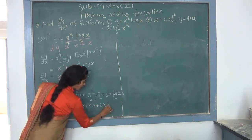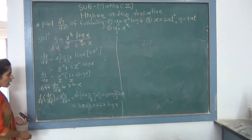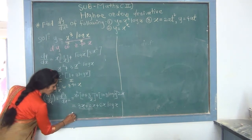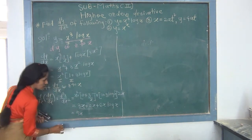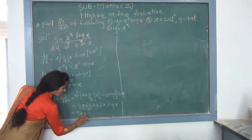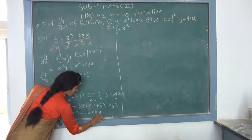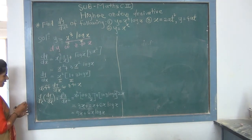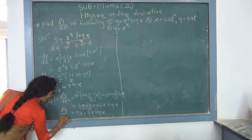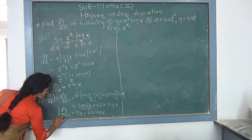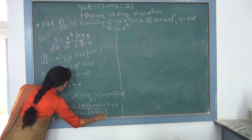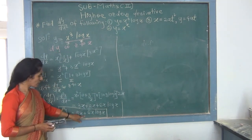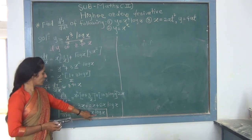Simplifying the right-hand side: x·(1/x) + log(x)·1 = 1 + log(x). So (1/y)·(dy/dx) = 1 + log(x). Shifting y to the right: dy/dx = y·(1 + log(x)) = x^x·(1 + log(x)) (equation 2). This is the first order derivative.